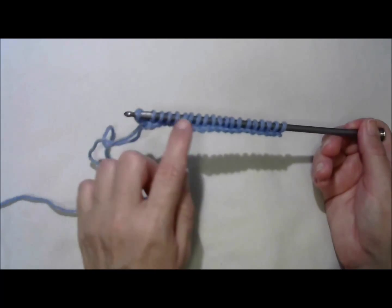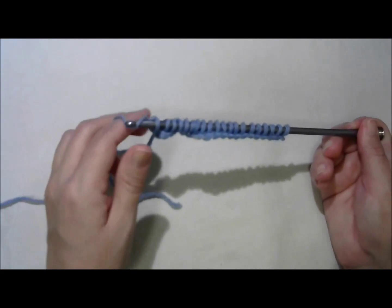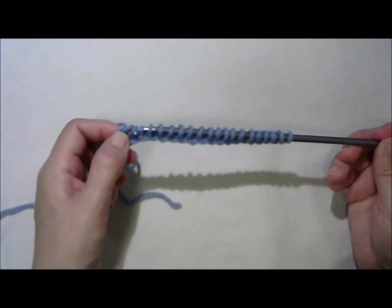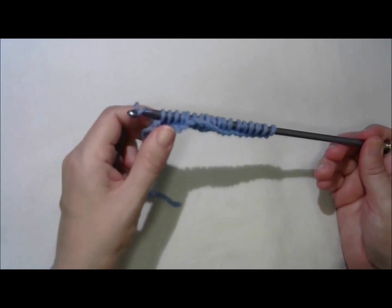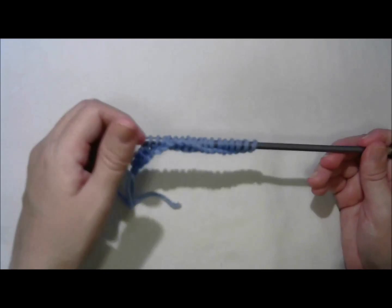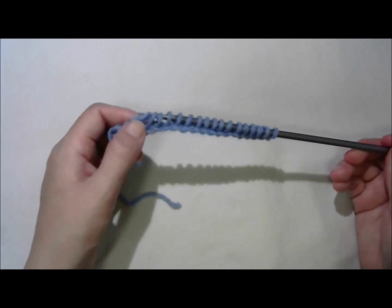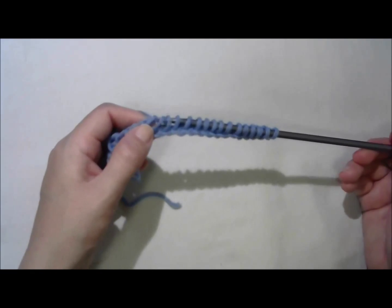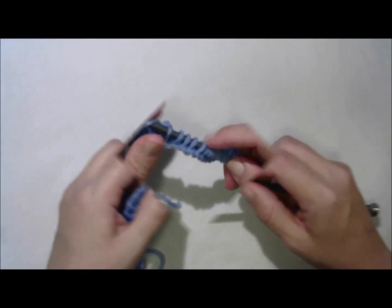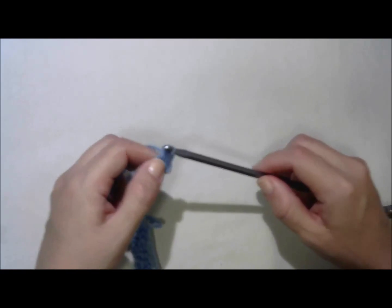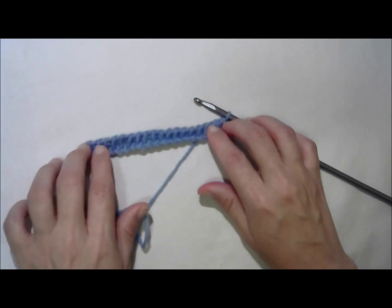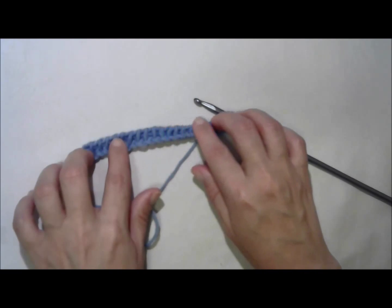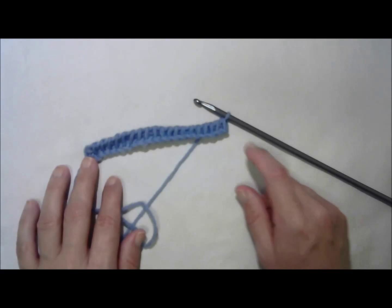Yarn over and draw through just one to make the edge. Now, yarn over and draw through two, and repeat that until you've worked all of these loops off. This is the return pass. That is my first return pass. That's my foundation row.